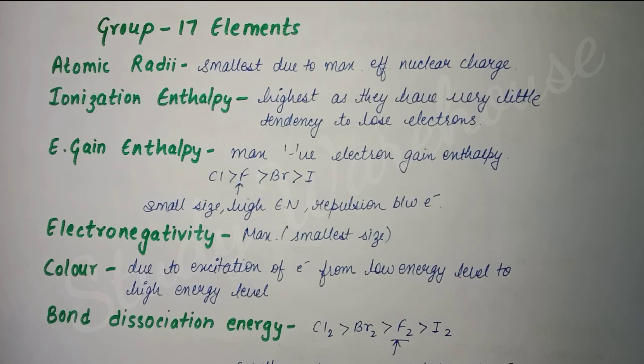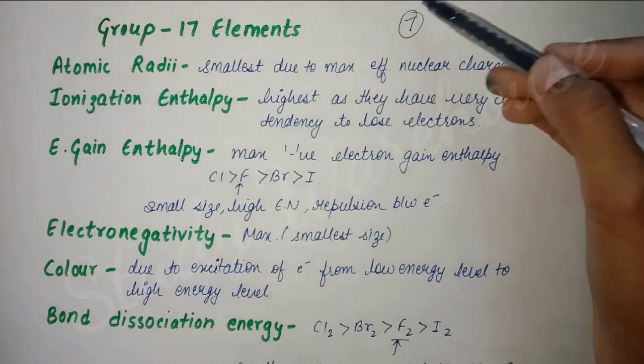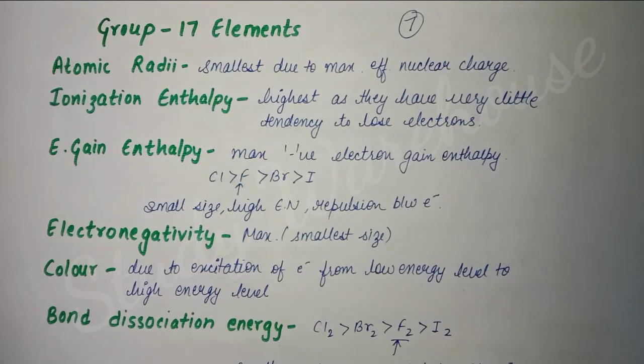First, if we talk about atomic radii, Group 17 elements have the smallest atomic radii due to maximum effective nuclear charge. We can say their electronegativity is highest, and electronegativity and size are inversely proportional to each other. For ionization enthalpy, it is highest for Group 17. Ionization enthalpy is the energy required to remove an electron. They have seven electrons in the outermost shell and want one electron to complete their octet, so they won't lose an electron - they want to gain. That's why their ionization enthalpy is highest, because maximum energy is required to remove an electron.